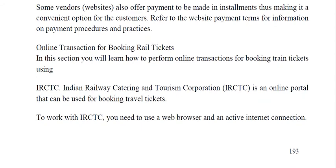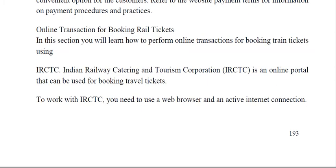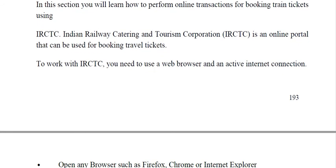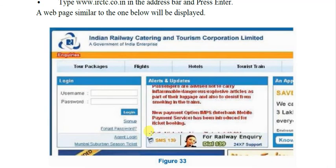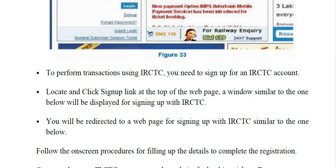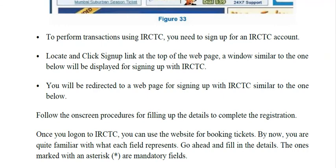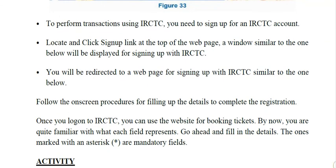If you want to book a train ticket, you can go to the IRCTC website or use the IRCTC app on your mobile. Here also you have to create a user account; you will be asked for a username and to set up a password. After creating an account, you can search for trains from your origin to destination on a specified date, choose your booking criteria, select the train, enter the number of passengers, and book your ticket.